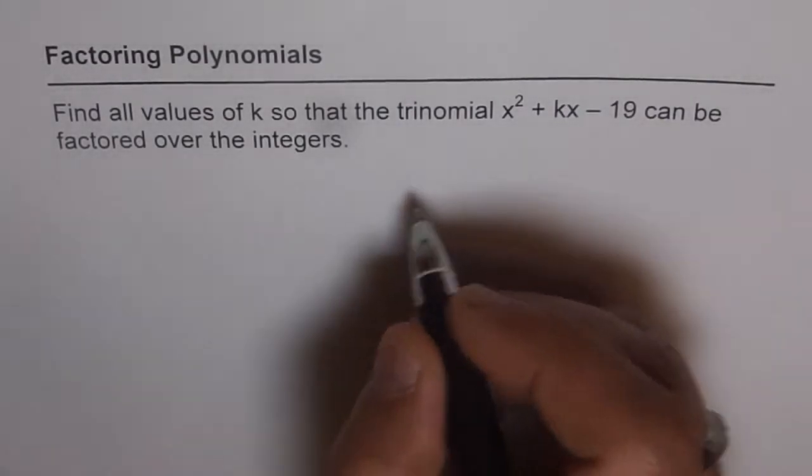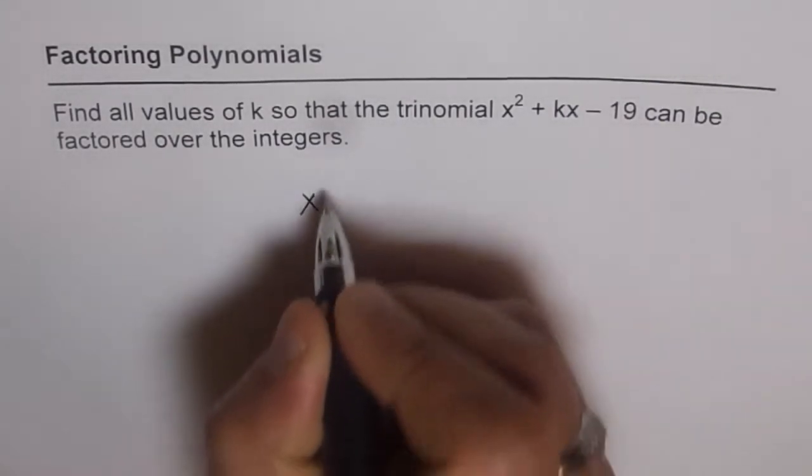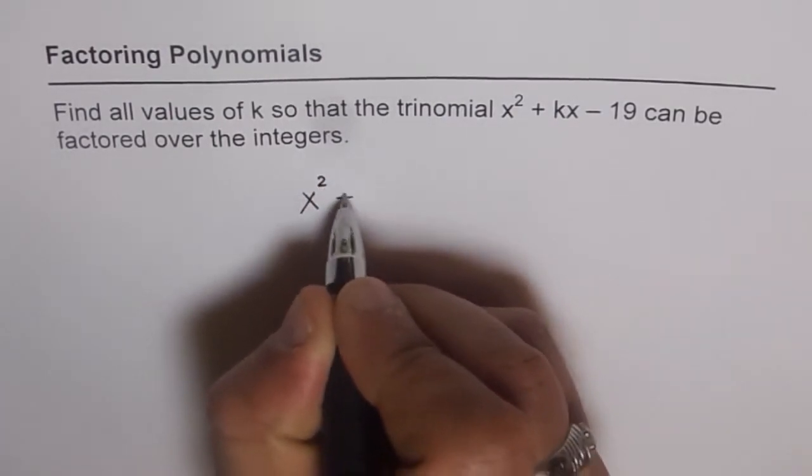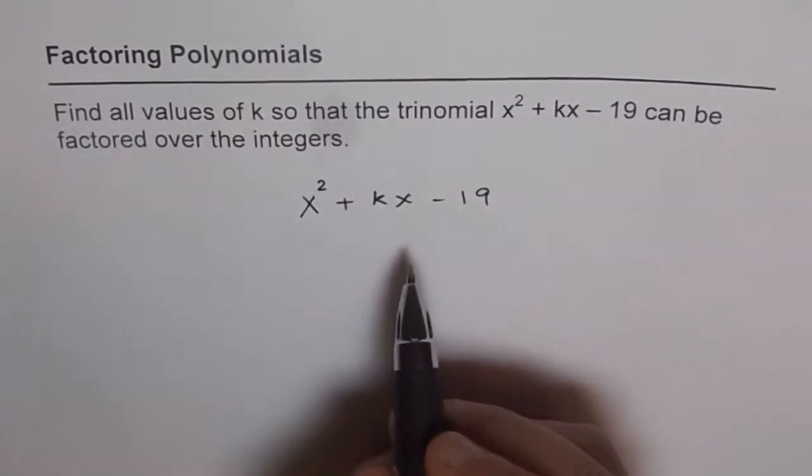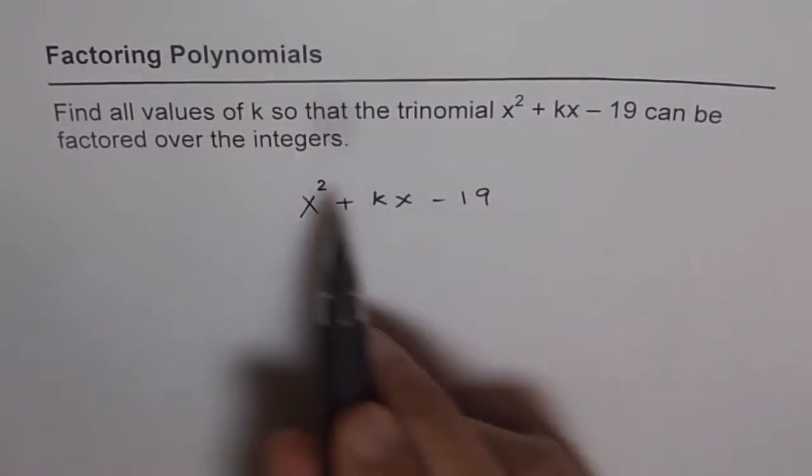Now, let's try to understand this problem. We have a trinomial x squared plus kx minus 19 and we want to factor this using integers.